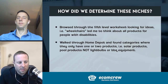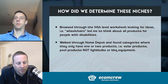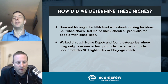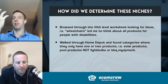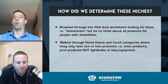So how do we determine these niches? Dave is going to walk through this because he has the fifth level worksheet — there's a module on that here. One of the things we're picking out is products for people with disabilities. Dave, can you walk through how you thought through that process? So one of the first things I do is go through this fifth level worksheet. It's just an Excel document of thousands of different categories, which I use as a brainstorming tool, quickly either crossing things off or letting things perk my interest.